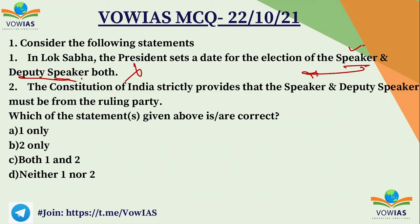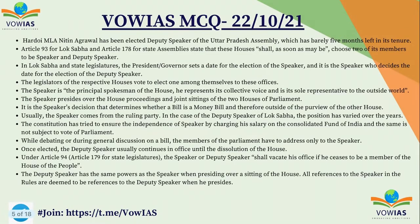The second statement says the Constitution strictly provides that Speaker and Deputy Speaker must be from the ruling party. No — the Constitution says there has to be a Speaker, but it does not talk about from which party the Speaker has to be. So the second statement is also wrong. The correct option is D, neither one nor two. Recently, Nitin Agarwal has been elected as Deputy Speaker of Uttar Pradesh Assembly. Article 93 for Lok Sabha and Article 178 for State Assemblies state that these houses shall, as soon as may be, choose two of its members to be Speaker and Deputy Speaker.